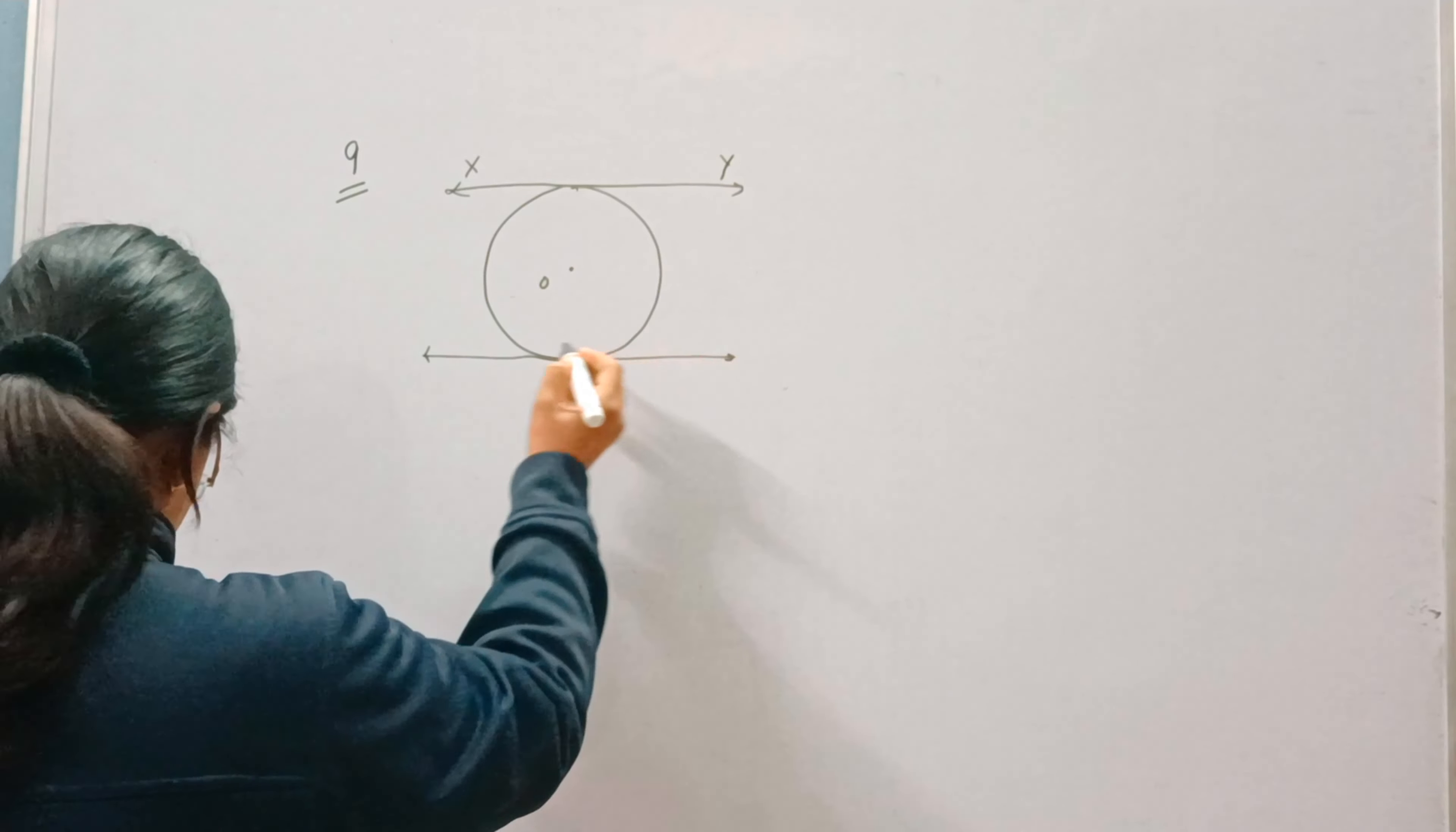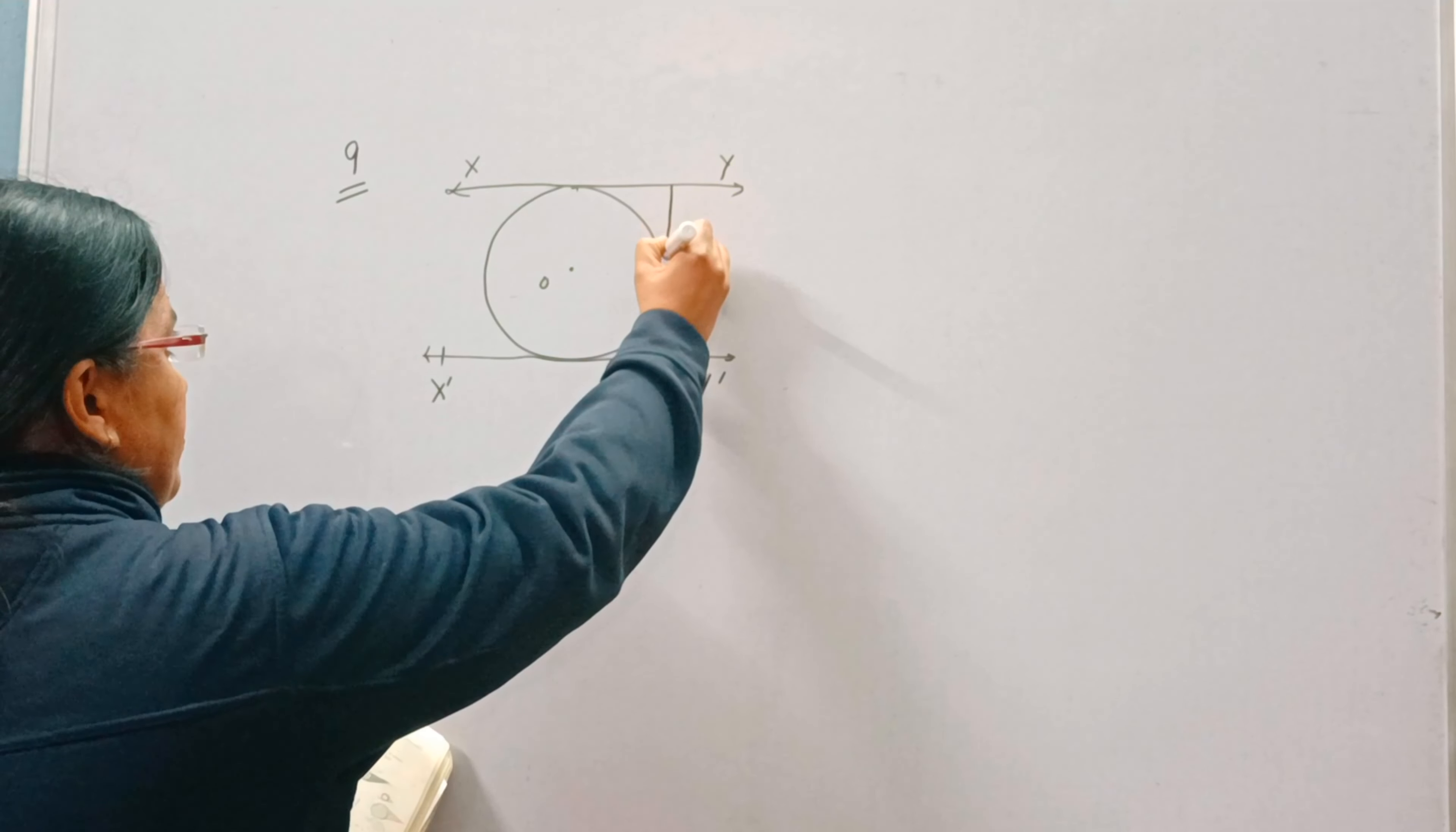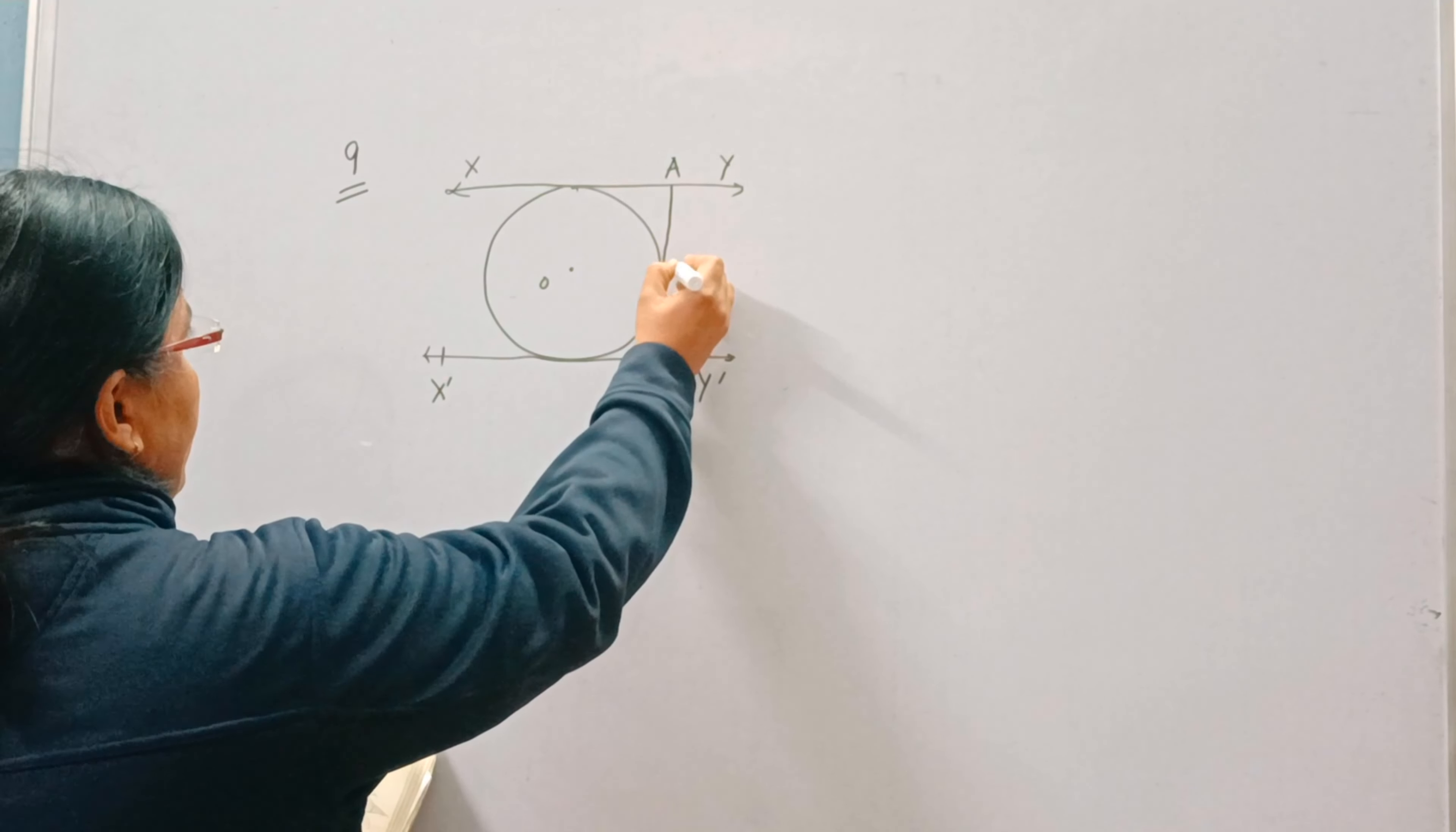Another tangent ab with point of contact c intersects xy at a and x dash y dash at b. So this is another tangent ab with point of contact c.